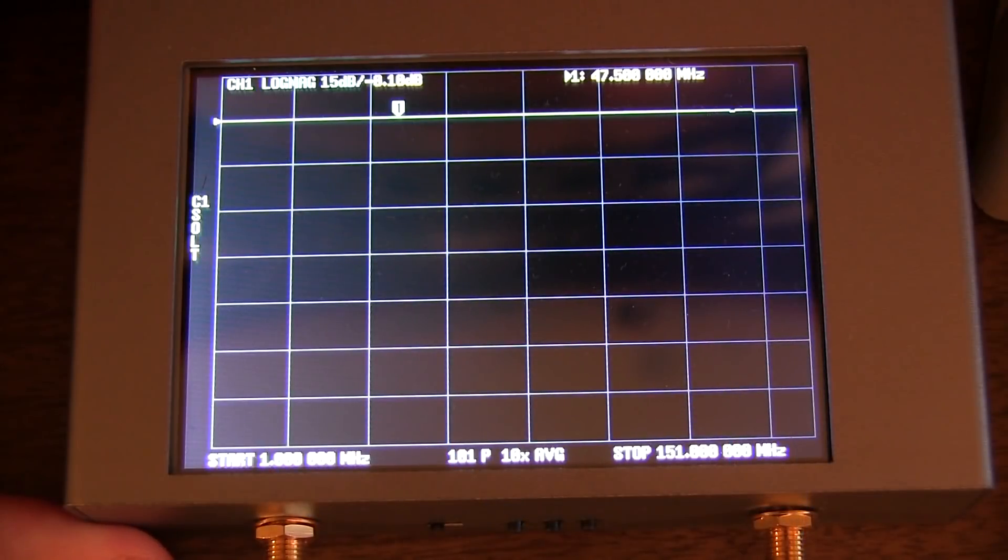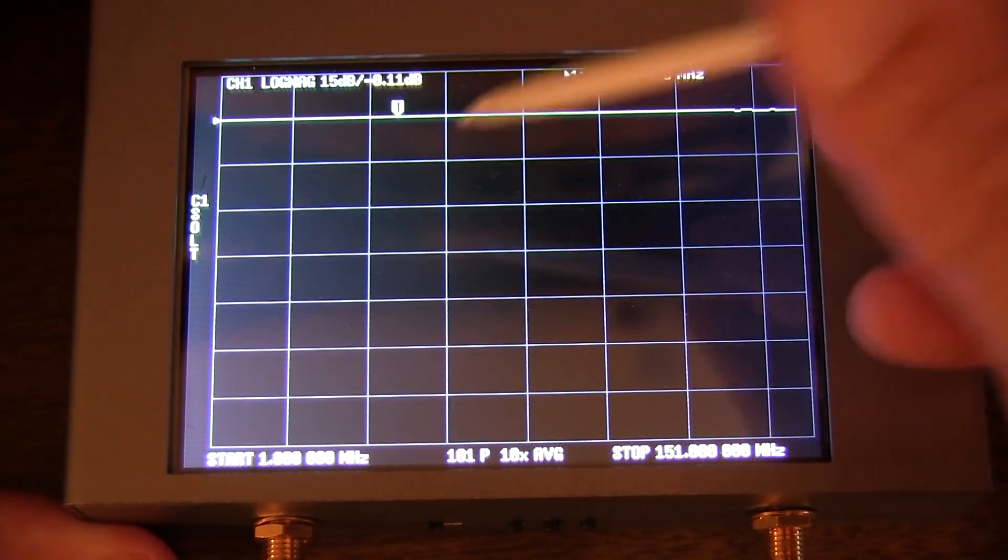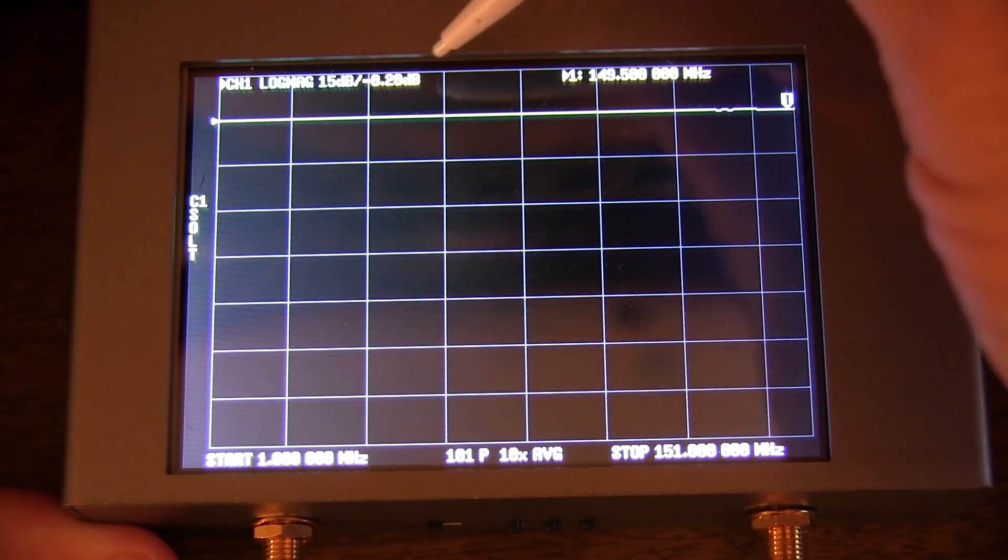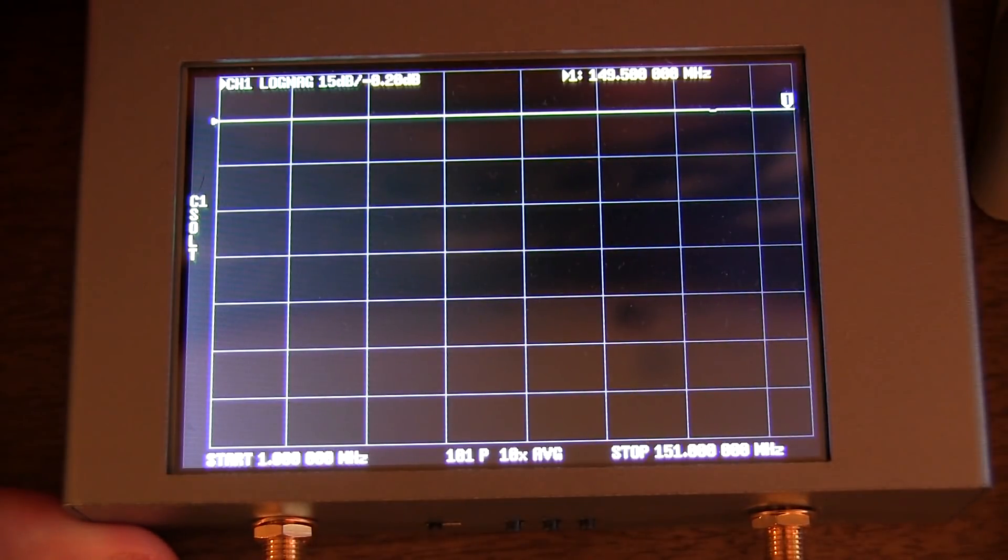Okay, with the switch in position one, we're essentially measuring the insertion loss. And we can see here, we move this marker, say all the way to 150 megahertz, we're looking at about two tenths of a dB of insertion loss. And I bet that's actually more due to my little SMA cables than it is to the switch itself.